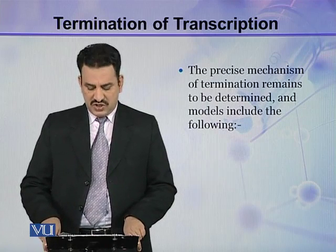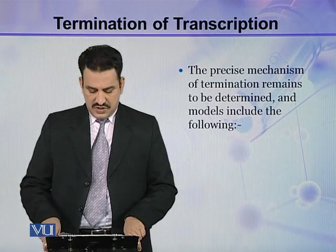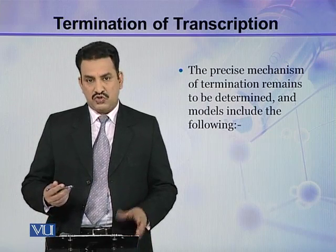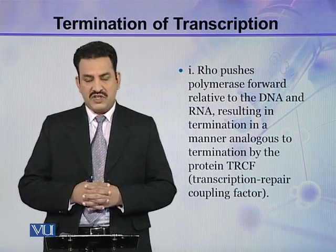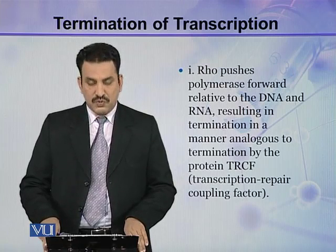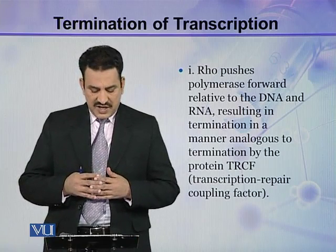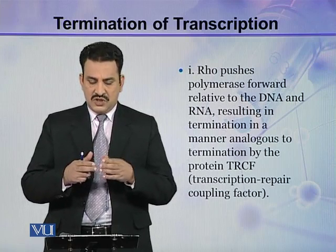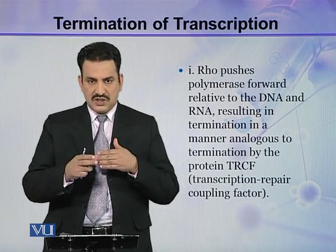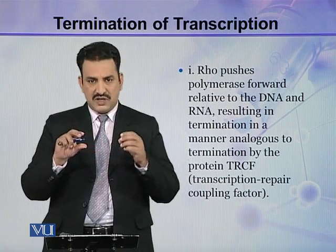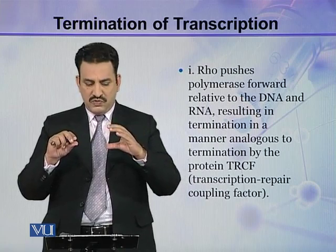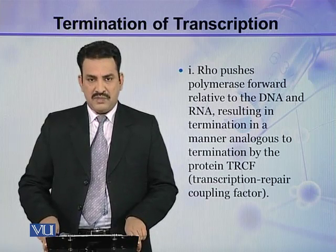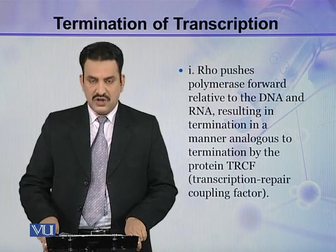The precise mechanism of termination remains to be determined, but the models which explain it may be of three types. The first model describes that RHO pushes the polymerase forward relative to the DNA and RNA. If the polymerase is present at some site, RHO pushes this polymerase somewhat forward along the DNA and RNA chain, resulting in termination in a manner analogous to termination by the protein TRCF.